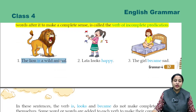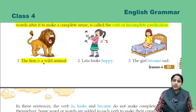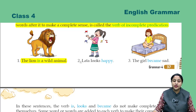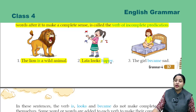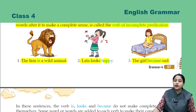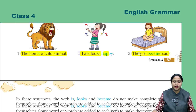First: 'The lion is a wild animal.' If we only say 'the lion is,' it gives no meaning. So we need additional words. 'The lion is a wild animal.' Second: 'Lata looks happy.' Just 'Lata looks' gives no clear meaning — we need 'happy'. Third: 'The girl became sad.' The verbs 'is', 'looks', and 'became' do not give complete sense by themselves, so more words need to be added.